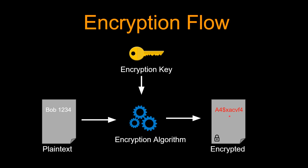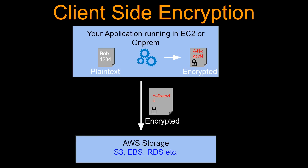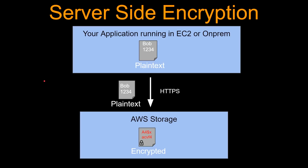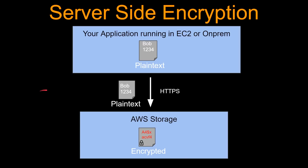Now the question is who will do this? Very generally speaking, you can do this in two ways. Option A: client-side encryption, where the client — for example, your application running in EC2 — maintains the keys, encrypts the data and sends the encrypted file into AWS storage. Option B: server-side encryption. You send the plain text data securely using HTTPS to AWS storage and the data gets encrypted in the AWS storage.